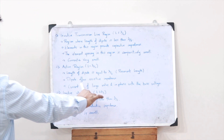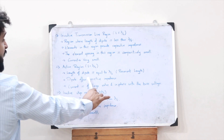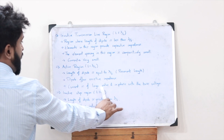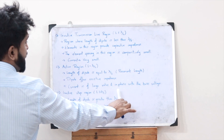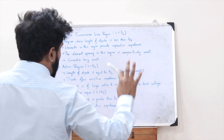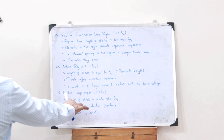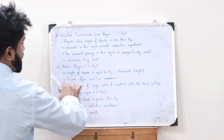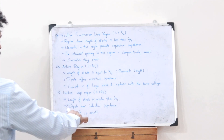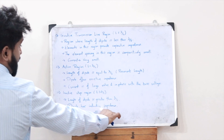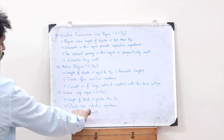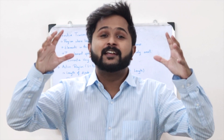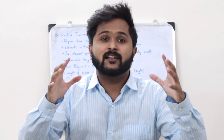The second region is the active region, where the dipole length equals lambda/2 — the resonant length. Here the dipole offers resistive impedance, and the current is very large and in phase with the base voltage. The third region is the inactive stop region, where the dipole length is greater than lambda/2, the impedance is inductive, and the current is small.